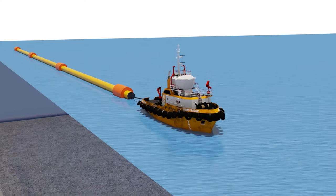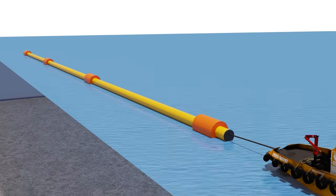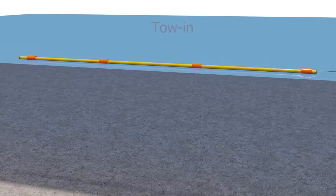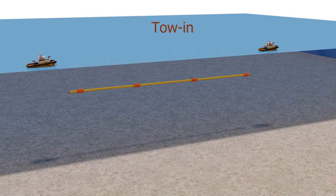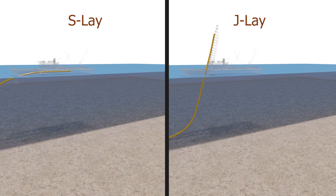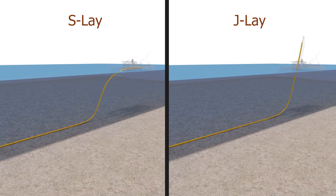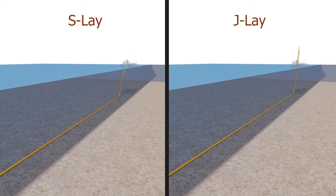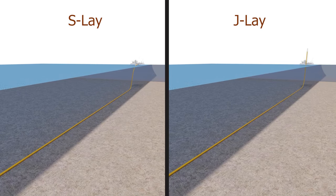There are three main methods of laying the pipes under the water. The reel method, S-lay and J-lay methods are for laying a very long pipeline. Let's focus on the S-lay method in this animation.